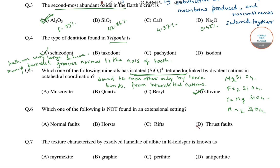Now here it is given that which of the following is not an extension setting. The options are: normal fault, horst, rift, and thrust fault.